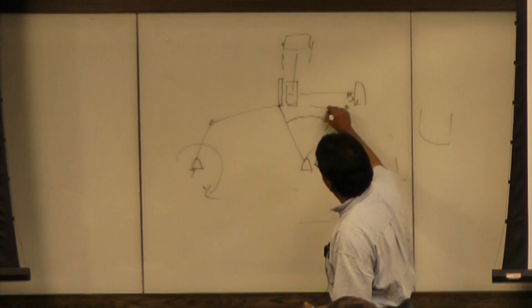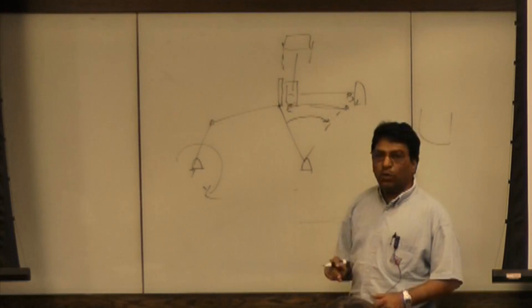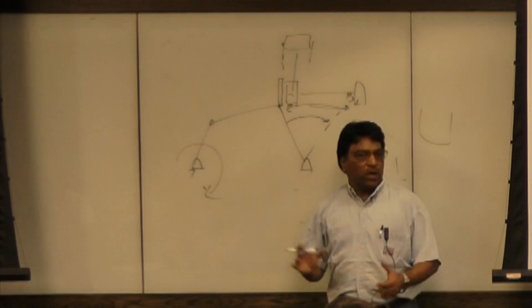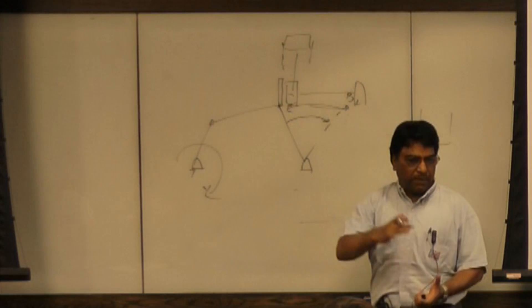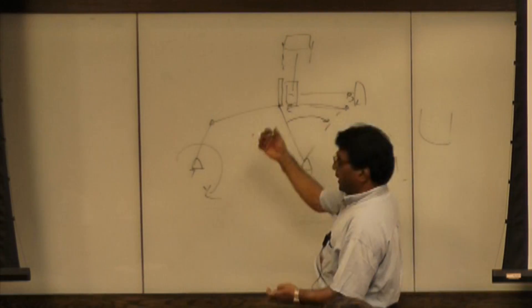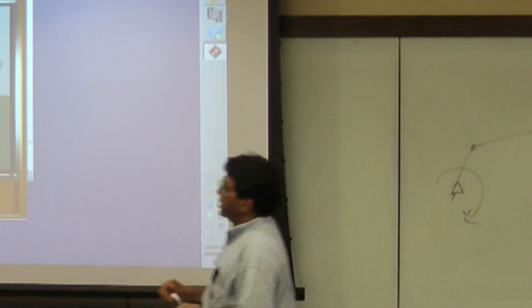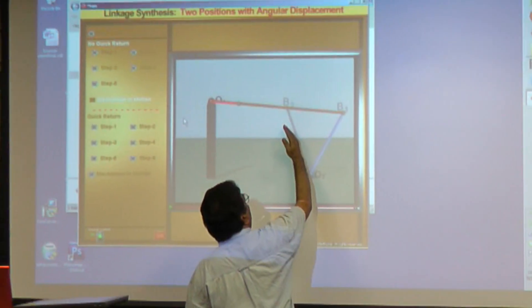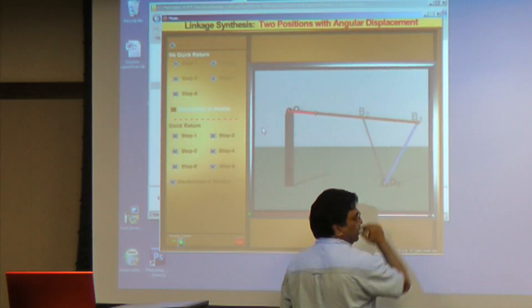On the way back I'm not doing any work, so I want to come back quicker to save time, to make my machine more efficient. So we can modify this design such that it comes back quicker but when it goes this way it goes slower.